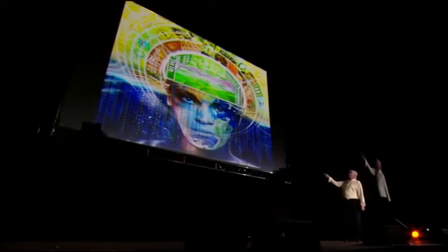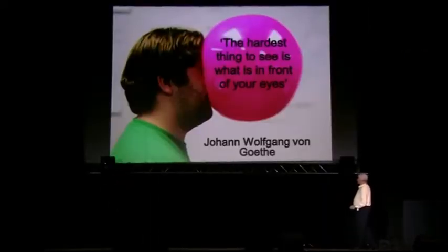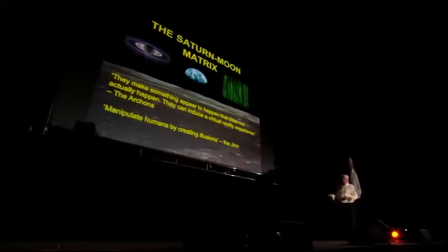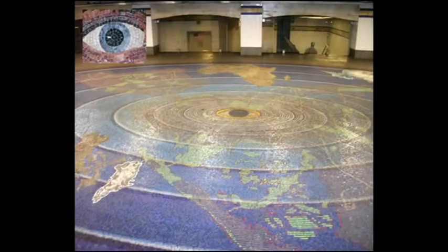So where is this leading us? The hardest thing to see is what is in front of your eyes. The Gnostics talked about the Archons making something appear to happen that does not actually happen — they can induce a virtual reality experience. The Islamic and pre-Islamic people talk about the djinn manipulating humans by creating illusions. I was in New York in 2010 and someone took me to the subway station for Ground Zero. There were these eyes all along the platforms.